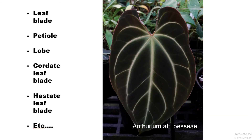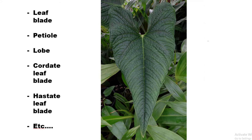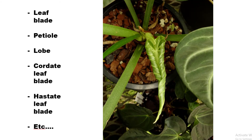A cordate leaf shape is just a leaf blade that resembles a heart in shape. A hastate leaf shape is just a leaf blade that resembles an arrowhead or is triangular in shape. Vernation just means how a leaf emerges from a bud — how it's configured in a bud. The vernation of most Anthuriums is that the margins of the leaf blade on an emerging leaf are rolled over each other.